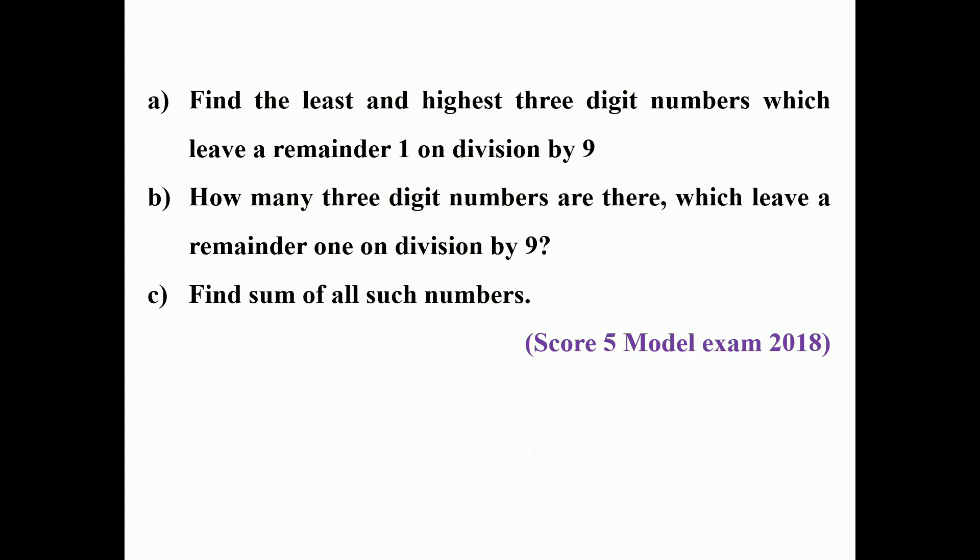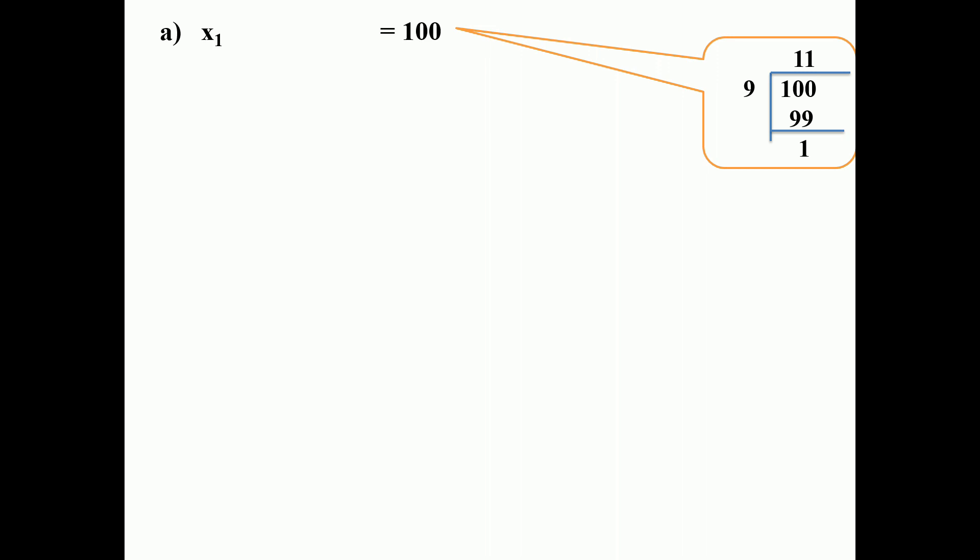Find the least and highest 3-digit numbers which leave a remainder 1 on division by 9. How many 3-digit numbers leave a remainder 1 on division by 9? Find the sum of all such numbers. This is a question from model examination 2018 with a score of 5. The least 3-digit number is 100: dividing 100 by 9, 9 elevens are 99 with remainder 1, so the first term is 100.